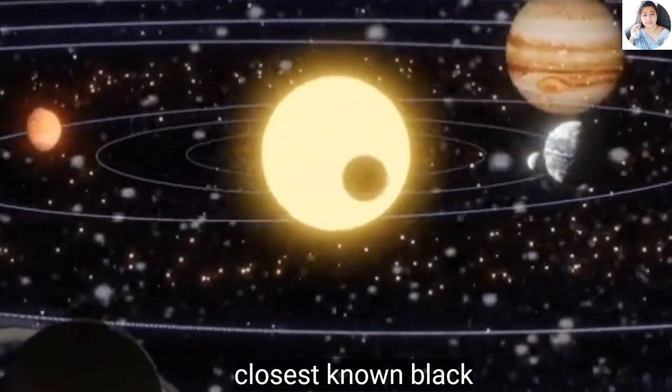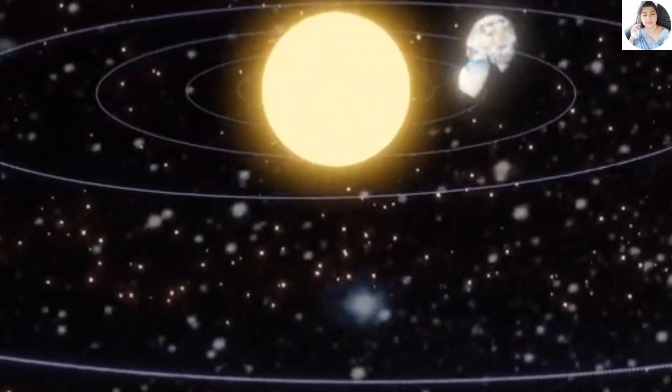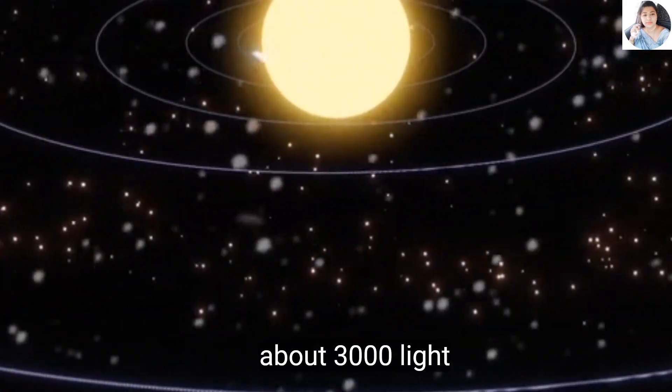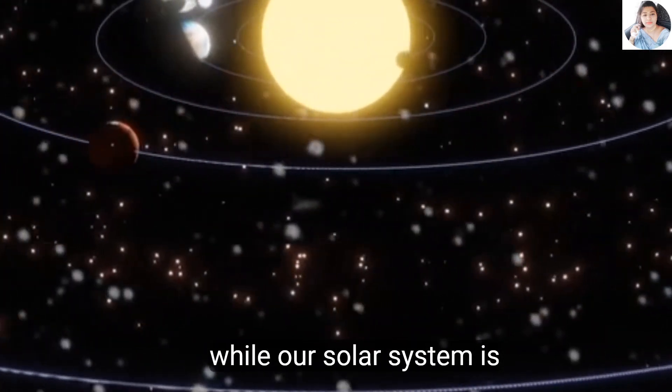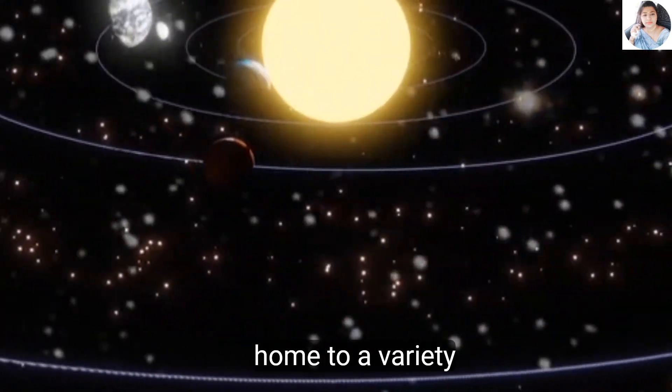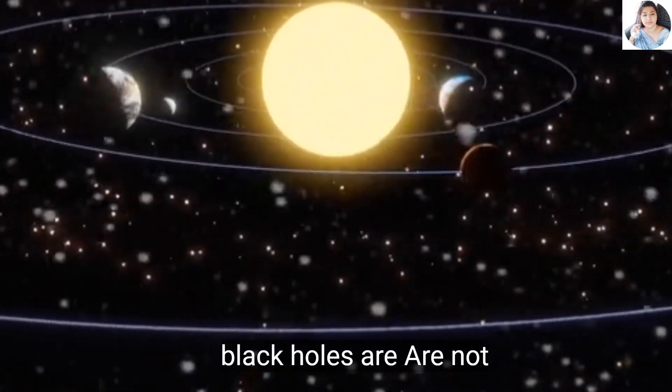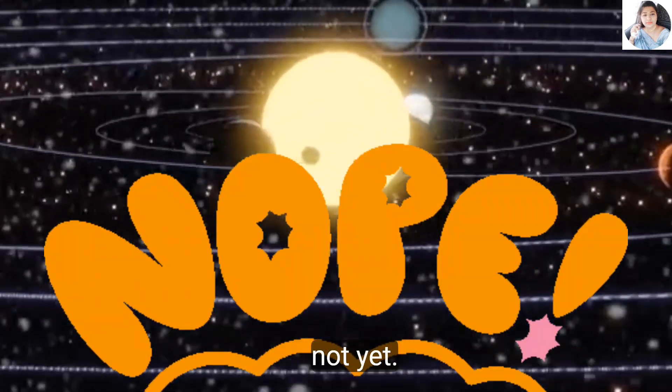The closest known black hole, V616 Monocerotus, is about 3000 light years away. So, while our solar system is home to a variety of celestial objects, black holes are not among them. At least, not yet.